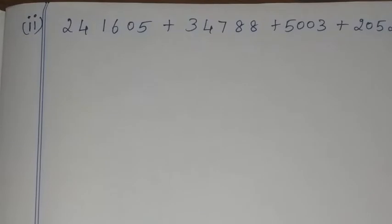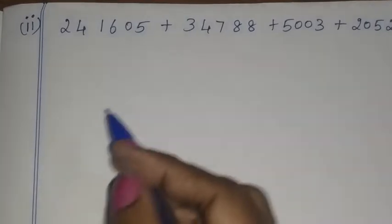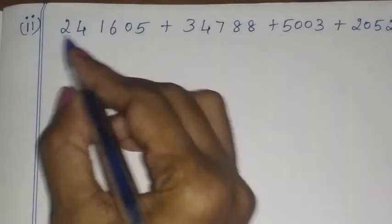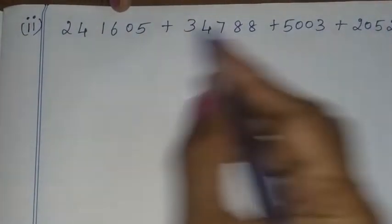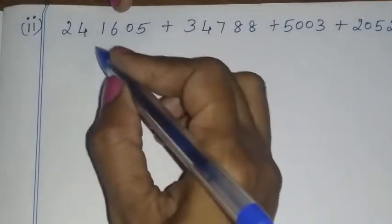So, 44,410 is our answer. Okay, now the second sum. It is a 6-digit number, a five-digit number, a four-digit number, and two four-digit numbers.